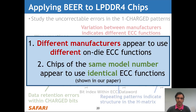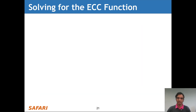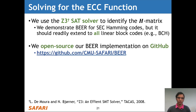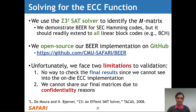We have two key takeaways: different manufacturers appear to use different on-die ECC functions, and chips of the same model number appear to use identical ECC functions. The next step is to identify the specific H matrix using the Z3 SAT solver. Although we demonstrate BEER for single error-correcting Hamming codes, BEER readily applies to all linear block codes, including BCH codes and Reed-Solomon codes. We open source our BEER implementation on GitHub. Unfortunately, we face two limitations: we cannot verify the final H matrix by inspecting the chip, and we cannot share the matrices due to confidentiality. Therefore, we validate BEER in simulation.